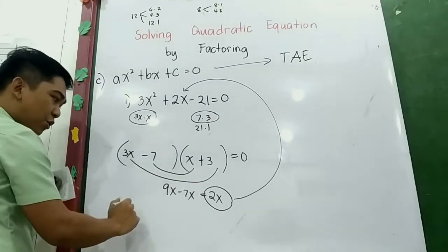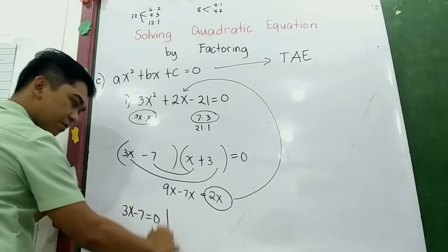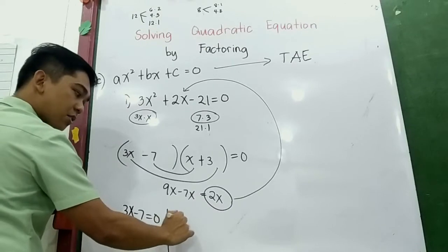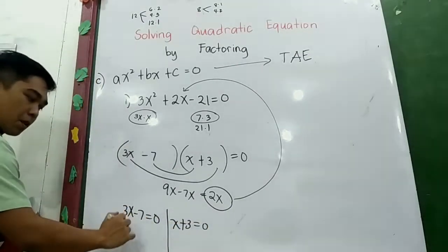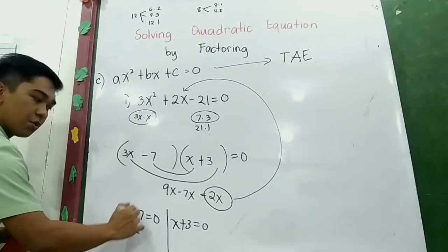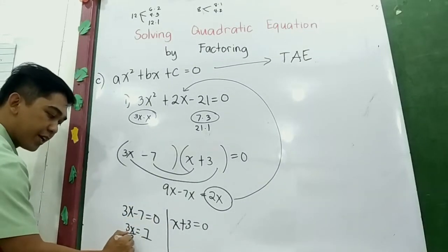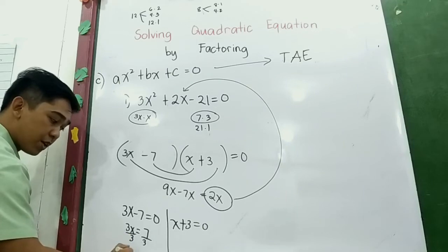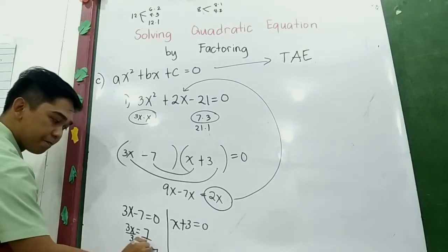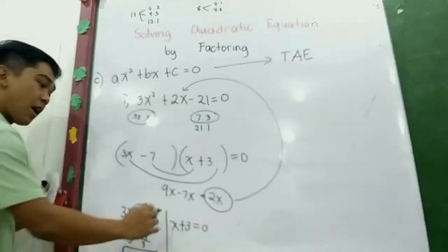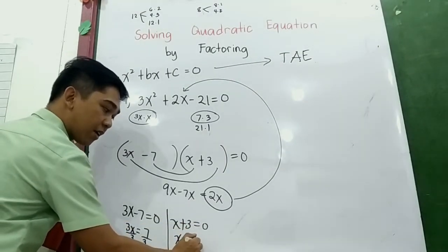Equate to zero: 3x − 7 = 0 and x + 3 = 0. From the first: 3x = 7, divide by 3, so x₁ = 7/3. From the second: x₂ = −3.